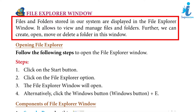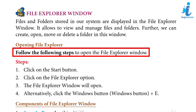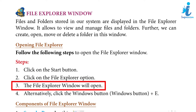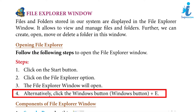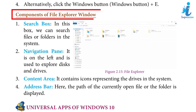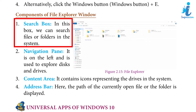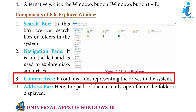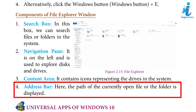File Explorer Window: Files and folders stored in our system are displayed in the File Explorer window. It allows us to view and manage files in folders. We can create, open, move, or delete a folder in this window. To open File Explorer: click the Start button, click the File Explorer option, and the window will open. Alternatively, press Windows Key + E. Components of File Explorer: Search box — used to search for files or folders; Navigation pane — on the left, used to explore disks and drives; Content area — contains icons representing drives; Address bar — displays the path of the currently opened file or folder.